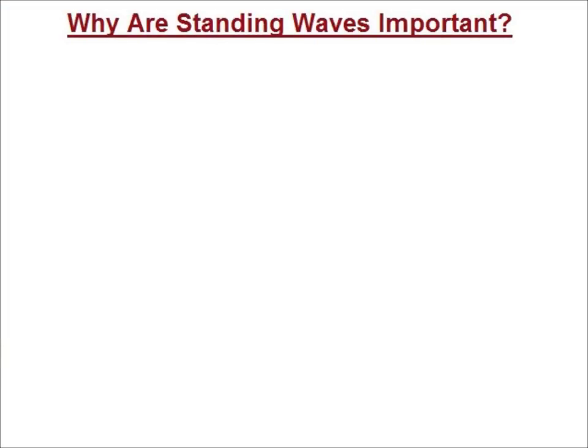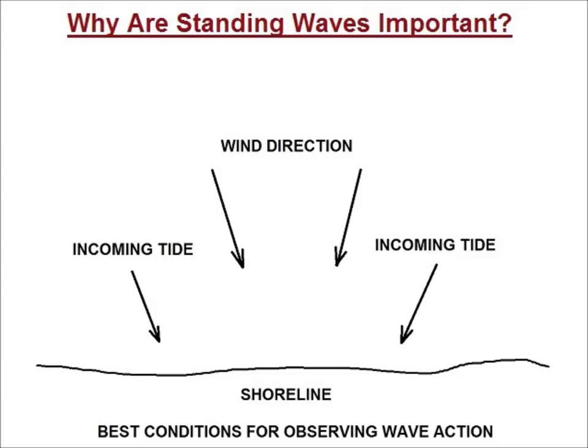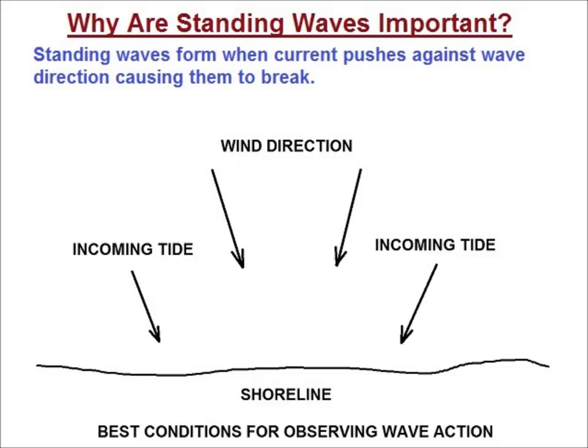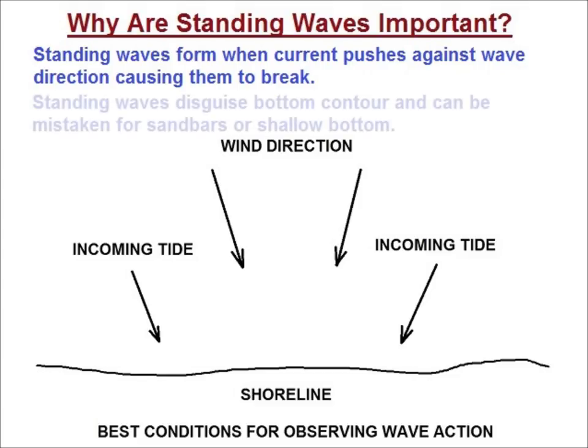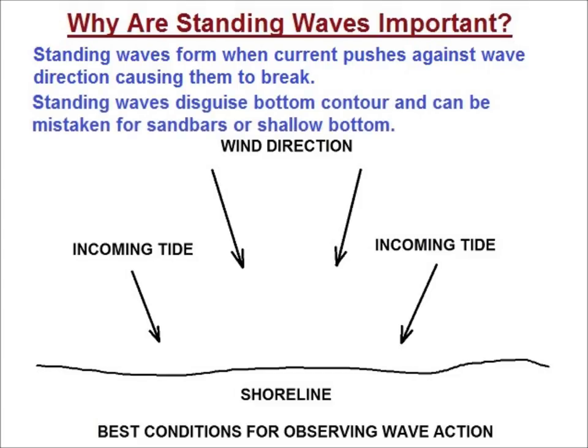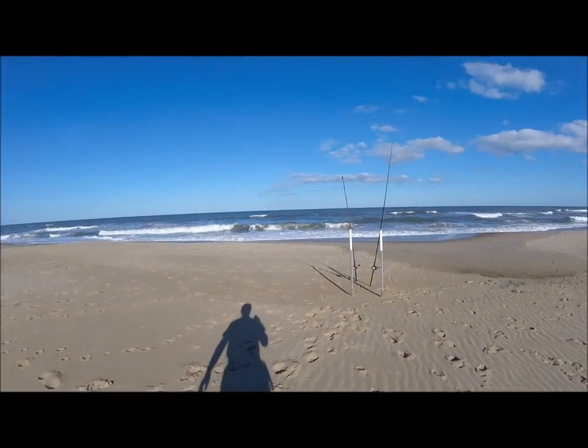So what do standing waves have to do with this? Finding subtle structure based on wave action on beachfronts like this one only works on the incoming tide, preferably with an onshore wind. These conditions provide the purest waveforms. When the tide is going out, particularly with an offshore wind, more water tries to return to the ocean through the dips, and the resulting current pushing against the incoming waves causes them to break — just like a rising bottom would. So when attempting to read bottom contour by observing wave action, always try to do so on the incoming tide.